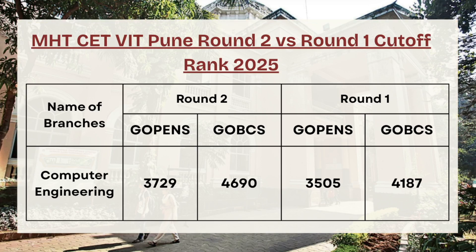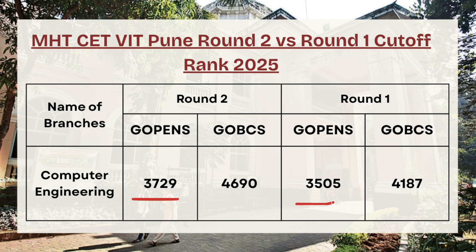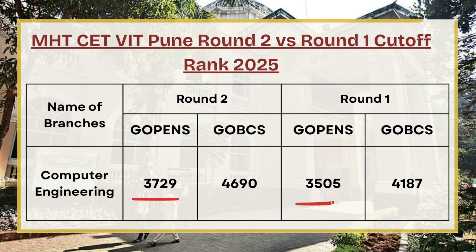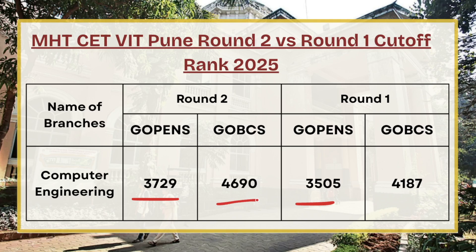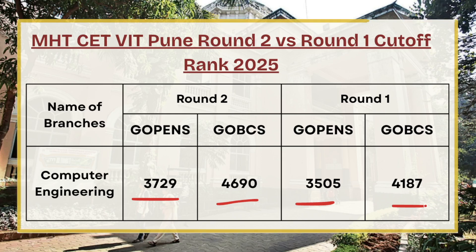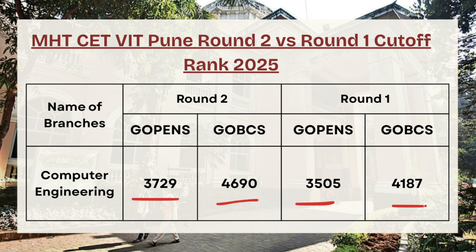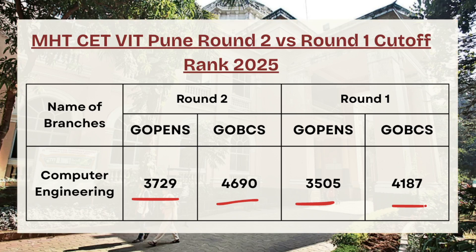Next we have Computer Science, one of the most demanding and popular courses. For G Open category, the cutoff rank is 32,729 in round two whereas in round one the cutoff rank was 35,050 — an almost 200 rank increment. For G OBC category, the cutoff rank for round two is 4,690 whereas in round one it was 4,187 — a drop increment of around 400 ranks. Candidates can use this comparison to estimate chances for round three and decide whether to confirm the allocated seat or proceed with betterment.